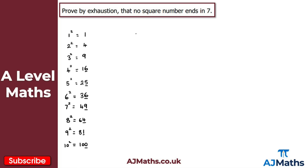We don't have to go further, but if we continue: eleven squared is 121 (last digit 1), twelve squared is 144 (last digit 4), thirteen squared is 169 (last digit 9). The pattern clearly repeats. The last digits cycle through 1, 4, 9, 6, 5, 6, 9, 4, 1, 0 and then keep repeating.